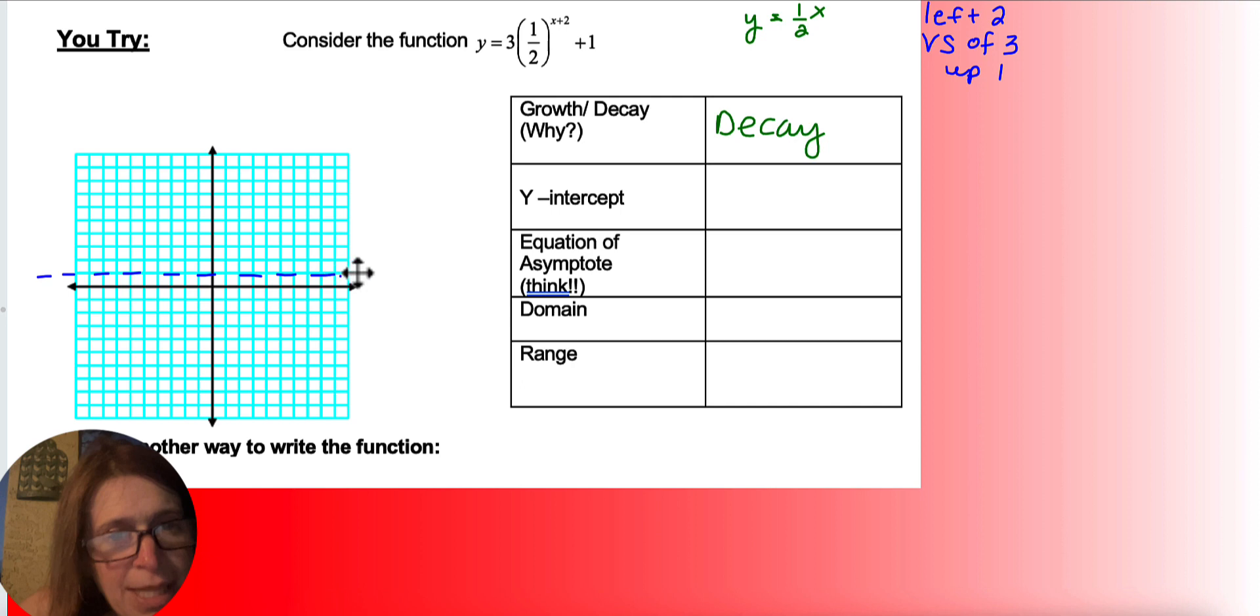Remember, decay means it's going to be falling from left to right. I'm going to make a table. Again, putting a negative 2 in is a really nice function there. So negative 2 plus 2 gives me 0, 1 half to the 0 is 1. So 3 plus 1 is 4.